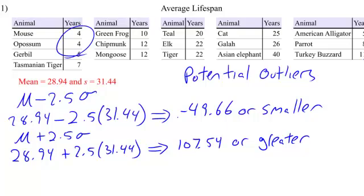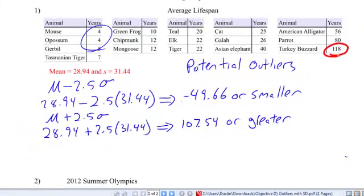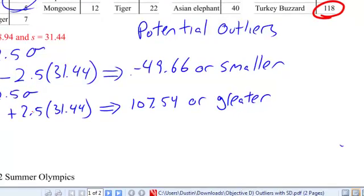So do I have anything? I do. I have one right here. So 118 is greater than 107.54, so I found an outlier. So I'm going to say that Turkey Buzzards are a potential outlier.